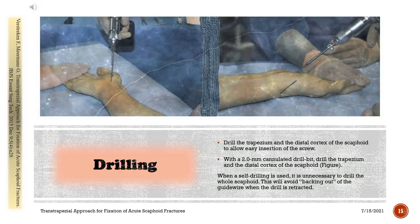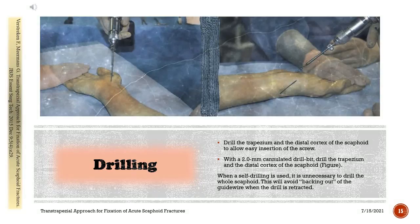Drilling: Drill the trapezium and the distal cortex of the scaphoid to allow easy insertion of the screw, using a 2.0 mm cannulated drill bit. When a self-drilling screw is used, it is unnecessary to drill the whole scaphoid. This will avoid backing out of the guide wire when the drill is retracted.